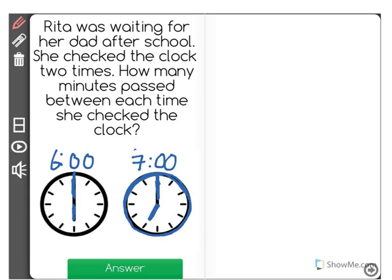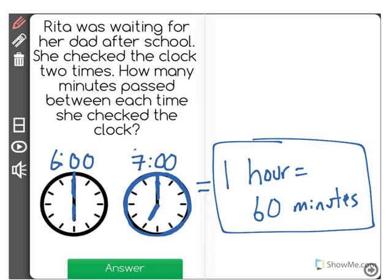Which means that by making a complete rotation all the way around, that is equal to 1 hour. And 1 hour is equal to 60 minutes. So between the 2 times that she checked the clock, 1 hour or 60 minutes passed.